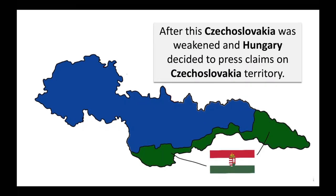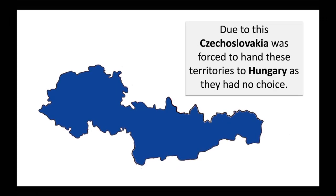After this, Czechoslovakia was greatly weakened, and Hungary decided to press claims on Czechoslovakian territory. Due to this, Czechoslovakia was forced to hand these territories to Hungary, as they had no choice and could not face war.